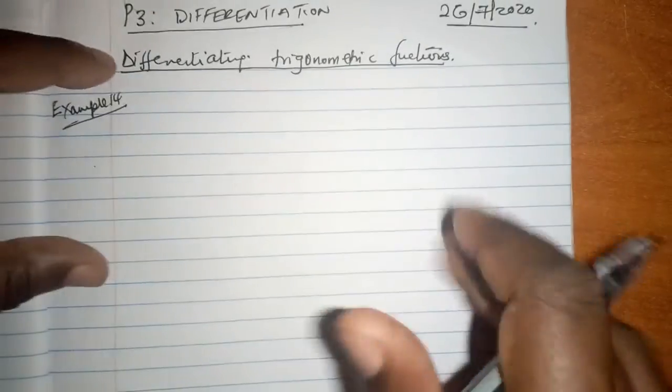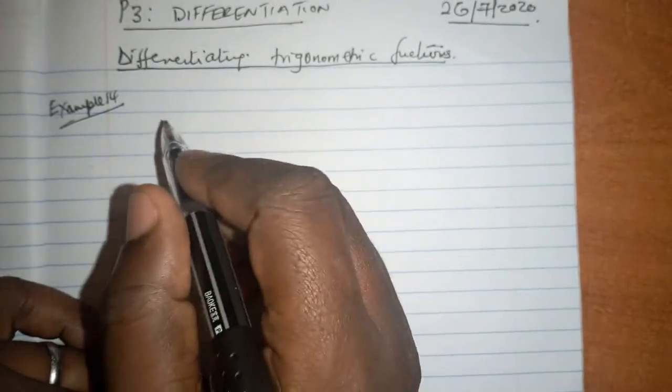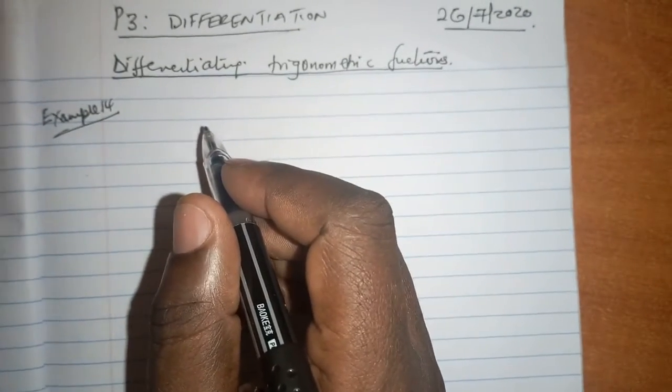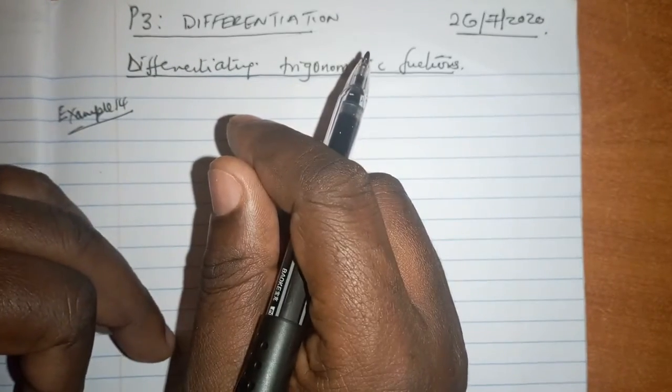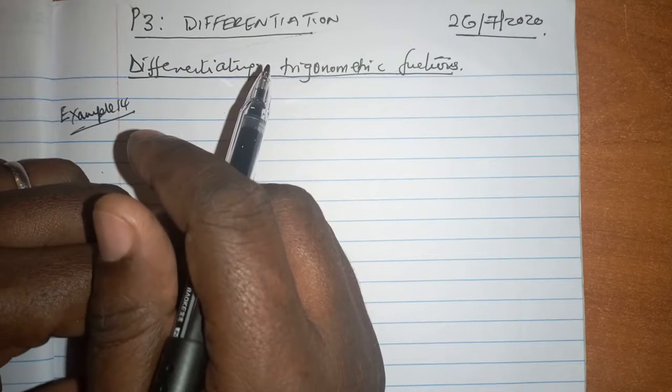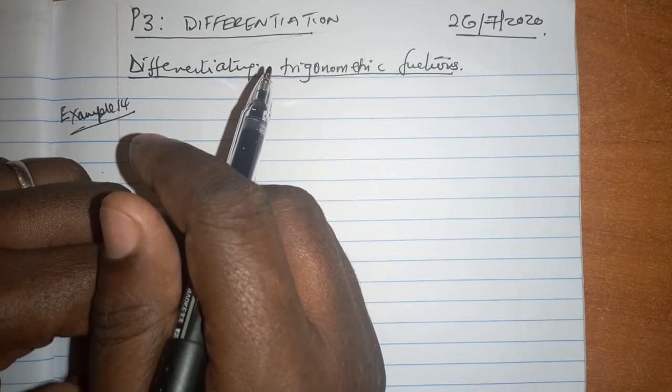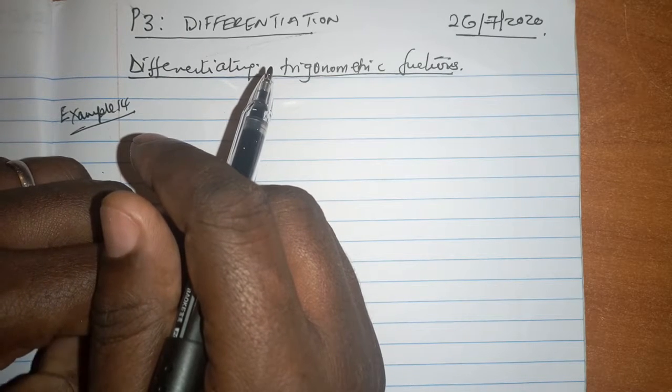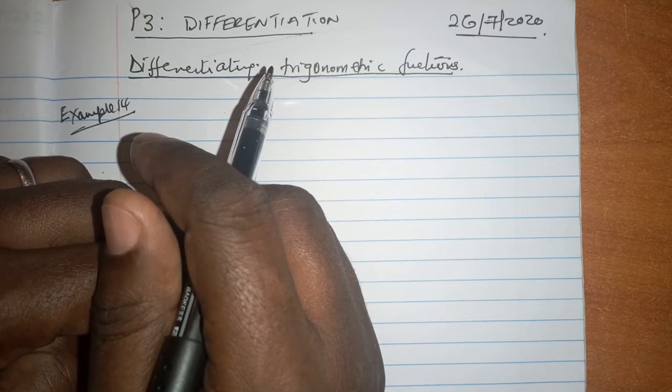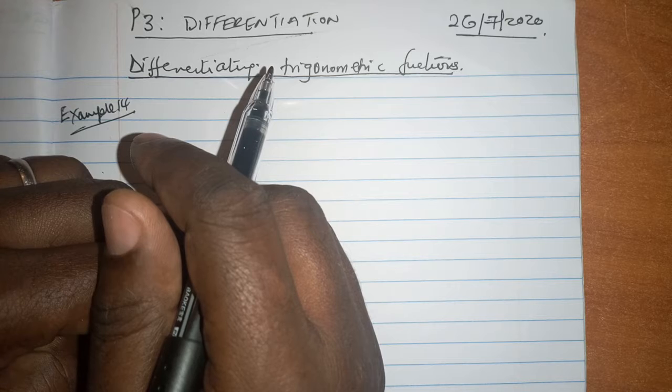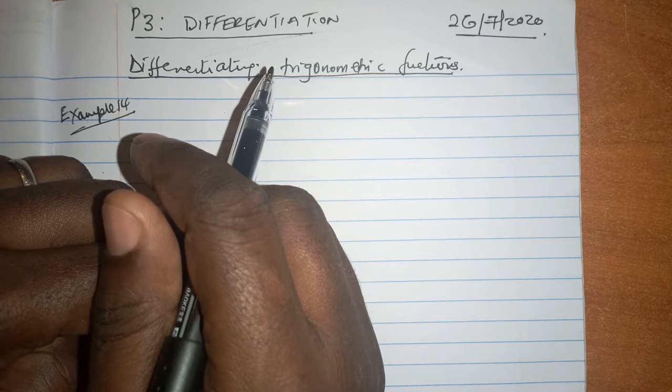We will be looking at example 14, which says, and we are told before example 14 that you can combine all the aforementioned rules that you have learnt so far and apply them to trigonometric functions to obtain standard results.